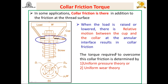The power screw consists of basically three elements: the nut, the screw, and the frame. To raise or lower the load, there is relative motion between the nut and the screw, and because of that there is friction between the threaded surfaces — that is, between the nut and the screw. We have already seen how much torque is required to raise the load and to lower the load.